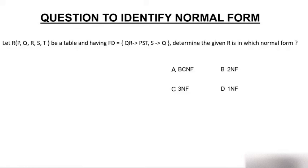You have given a question where R is a table having attributes PQRST with functional dependencies QR to PST and S to Q. You have to determine which normal form the given table is in. I request you to kindly watch my previous video so that you will understand everything very clearly.